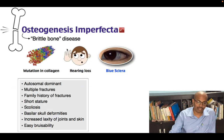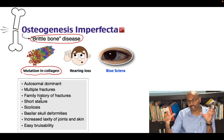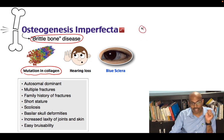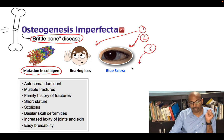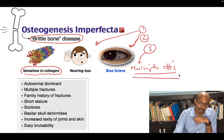Osteogenesis Imperfecta is also called brittle bone disease. It involves a mutation in type 1 collagen and can be autosomal dominant or recessive, with forms ranging from mild to severe. The classic triad is: multiple fractures, blue sclera, and hearing loss. You must remember this triad.